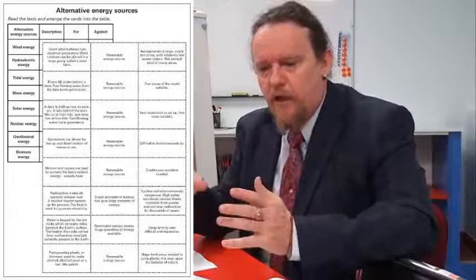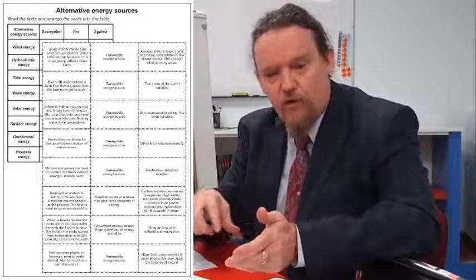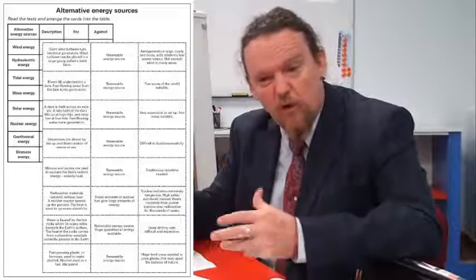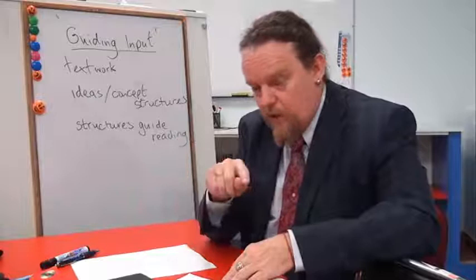Alternative energy sources is another very good example where students look at a table with headings of different types of energy and they've got descriptors that look at the for and against of a certain type of energy. Whether it's a natural source of energy or nuclear energy for example, renewable or a fossil fuel energy source, and again they sort their cards into the right place.